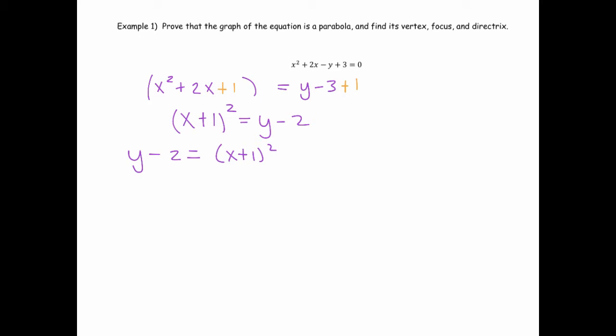There we go, I've completed the square. I can tell it's a parabola that has some shifts, because it's not in the basic form y equals 1 over 4p x squared. There's some shifting happening, the vertical and horizontal shifts that are occurring.